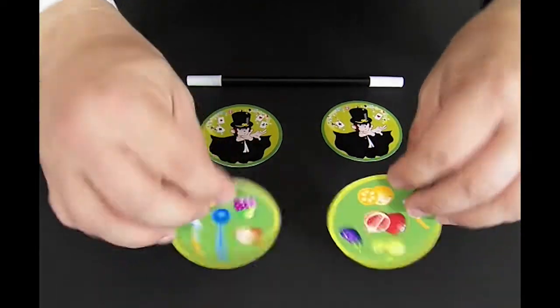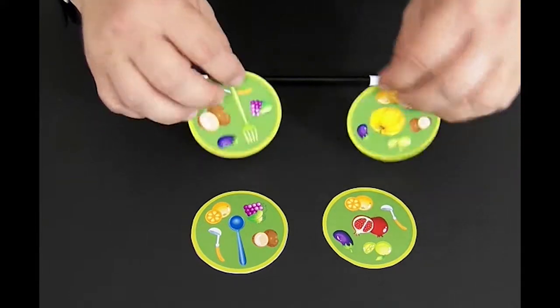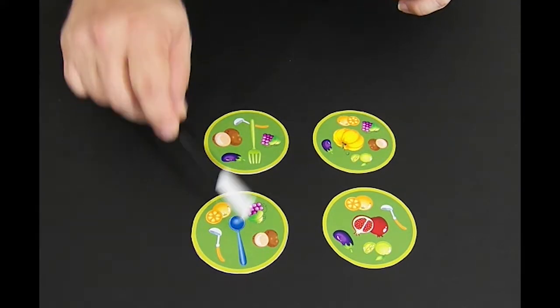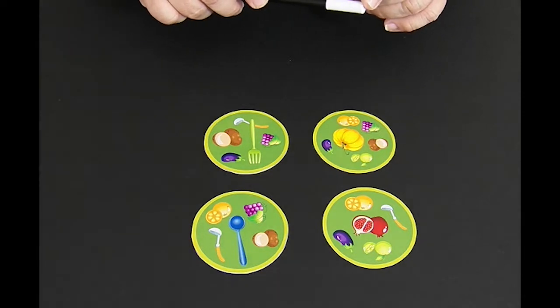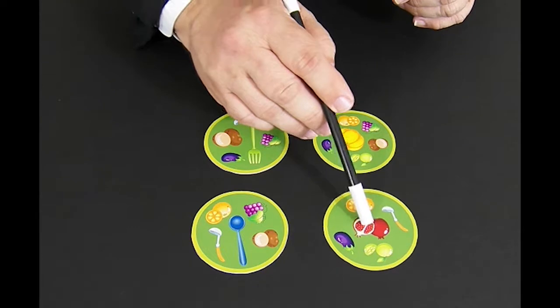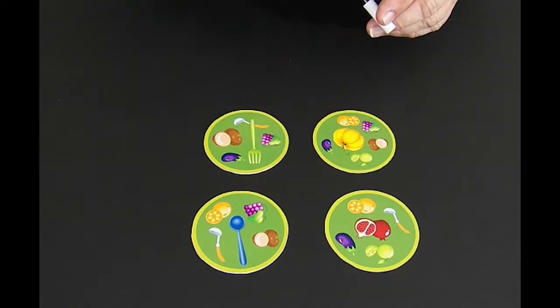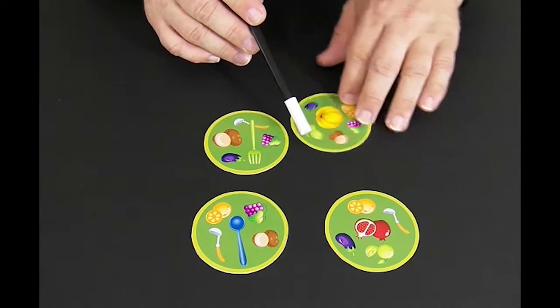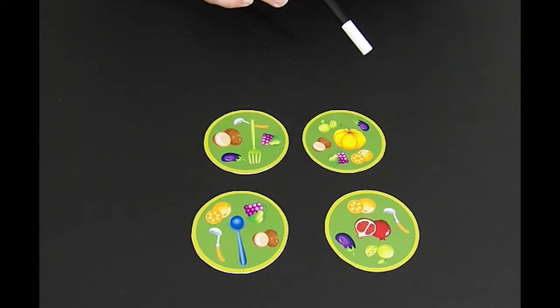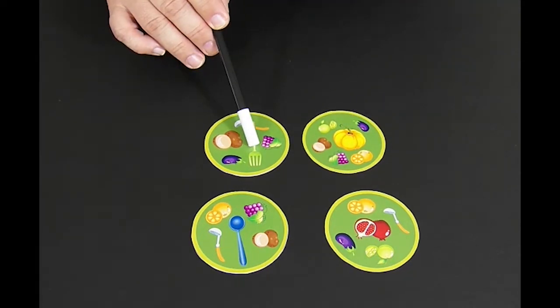Each of the pictures are represented by a different number. For example, the spoon is number one. Number two is the pomegranate. There's two sides. Number three is the pumpkin. If you look very closely at the pumpkin in the vine, there's a number three. That's number three. Number four is the fork.